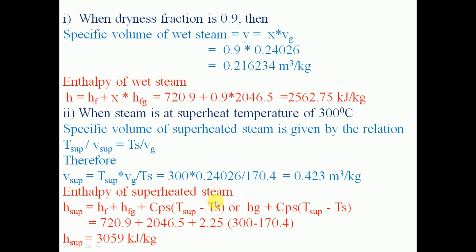The enthalpy of superheated steam is given by H_sup equals sensible heat plus latent heat plus Cps multiplied by the temperature difference between the superheated temperature and the saturation temperature. This is the enthalpy of saturated steam plus the heat added above the saturation temperature up to the superheated temperature. Therefore: H_sup = 720.9 plus 2046.5 plus 2.25 multiplied by the temperature difference, giving H_sup equal to 3059 kilo joule per kg.